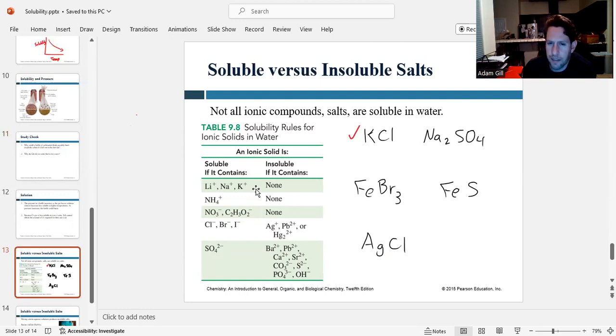Now, what about iron bromide? Well, iron is not listed on here. So let's take a look at bromide. Pretty much anything with bromide is soluble unless it's silver, lead, or mercury. Well, this is not silver, lead, or mercury. So I would expect this to dissolve in water.